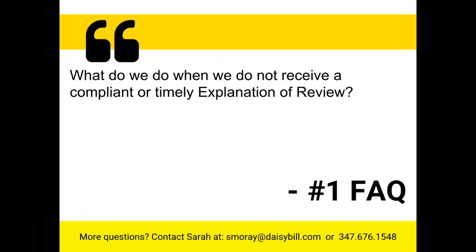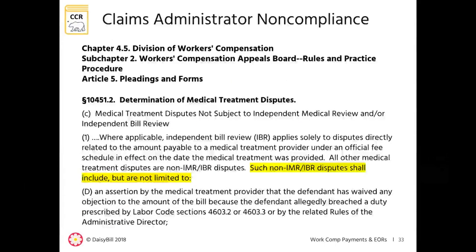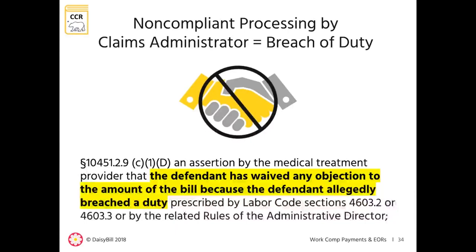I want to address our number one most frequently asked question about today's topic: what do we do when we do not receive a compliant or timely explanation of review? A provider's only recourse is to file a lien within 18 months of the last date of service. Per California regulations, a provider is allowed to file a lien for non-IMR or IBR disputes — meaning a lien is allowed for disputes not related to the amount of payment. When a claims administrator fails to perform its regulated duties, the regulation instructs the provider to file a lien, asserting that the claims administrator waived any objection to the amount of the bill because the defendant allegedly breached a duty.